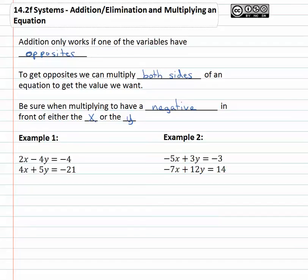So in example one, we have 2x - 4y = -4 and 4x + 5y = -21. I want to draw our attention to the x's. We want these x's to have negatives in front of them. Notice one of the x's has a 4x. If the first equation had a negative 4x, it would subtract out with the second equation's positive 4x. So what we will do is multiply both sides of the equation by negative two.